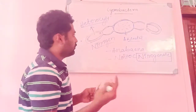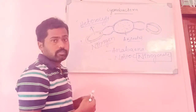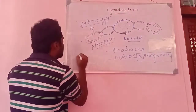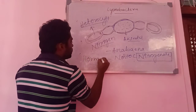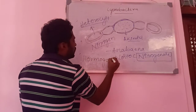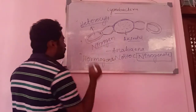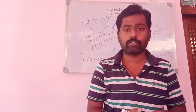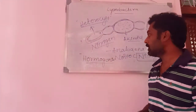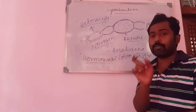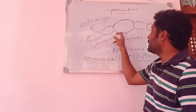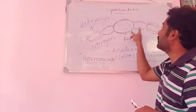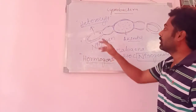In fragmentation, each fragment of a filamentous form that can grow into a new filament is called a hormogonium. Akinetes are the larger resting structures produced during unfavorable conditions, surrounded by a very thick wall, storing large amounts of reserve food material. Heterocysts are nitrogen-fixing structures found in few cyanobacteria like Anabaena or Nostoc.